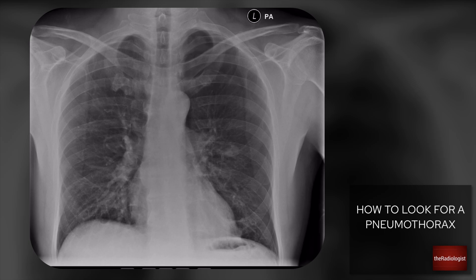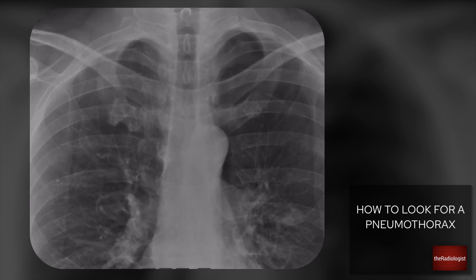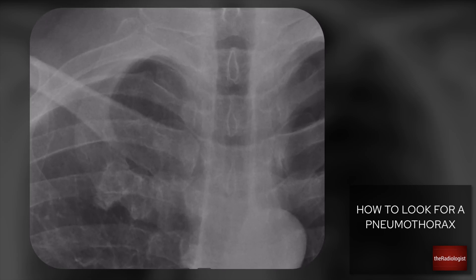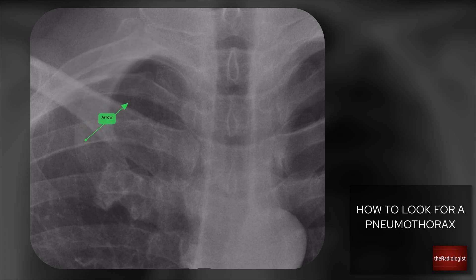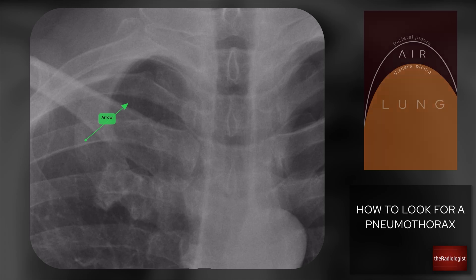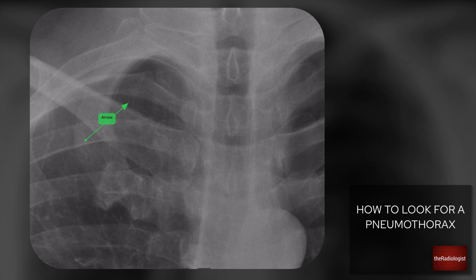Here's another case. Looking first at the right apex, I think I can see lung markings and I can't see any pleural lines. With a pneumothorax, the visceral and parietal layers separate and you should be able to see the visceral pleura as a thin white line paralleling the chest wall. I can't see any evidence of that here, so no pneumothorax on the right.